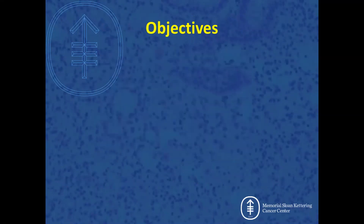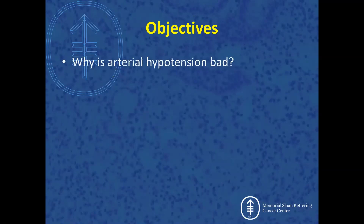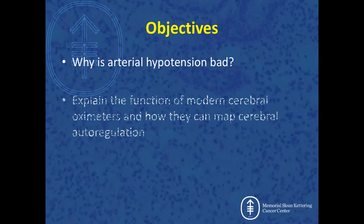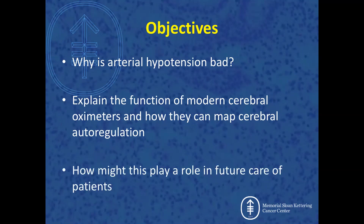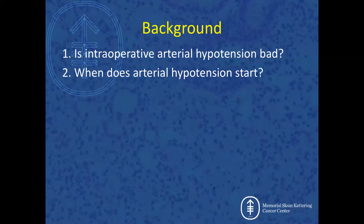The objectives of today's talk: Why is arterial hypotension bad? Is it even bad? I'll explain the function of modern cerebral oximeters and how they can help map cerebral autoregulation, and then finally, how might this play a role in the future care of our patients?